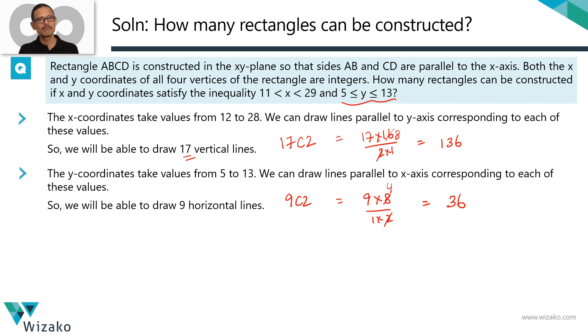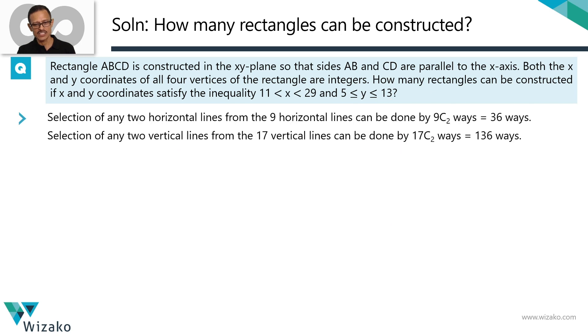When do we get a rectangle? When we have picked two horizontal and two vertical lines. So we'll come to the answer in the next slide. We'll just summarize until this point. So pick the two horizontal lines in 36 ways, 9 C2. We'll pick the two vertical lines in 17 C2, which is 136 ways. The number of ways of picking two horizontal and two vertical. We learned it in our permutation combination lessons. Whenever you combine them with an and, multiply the numbers.